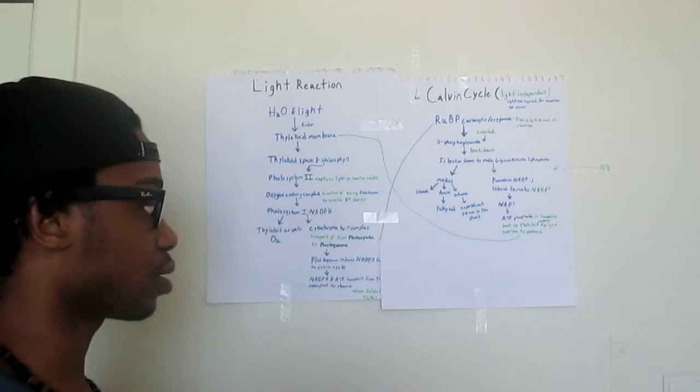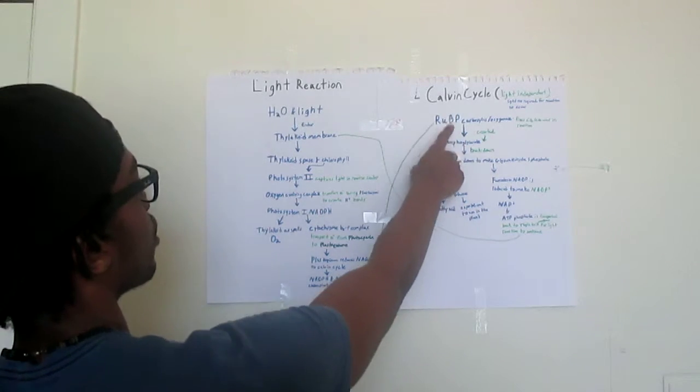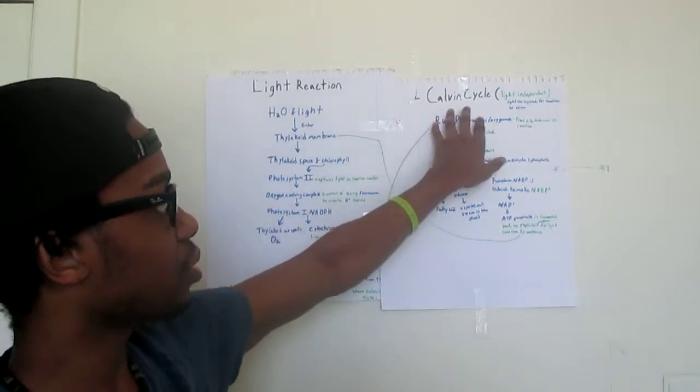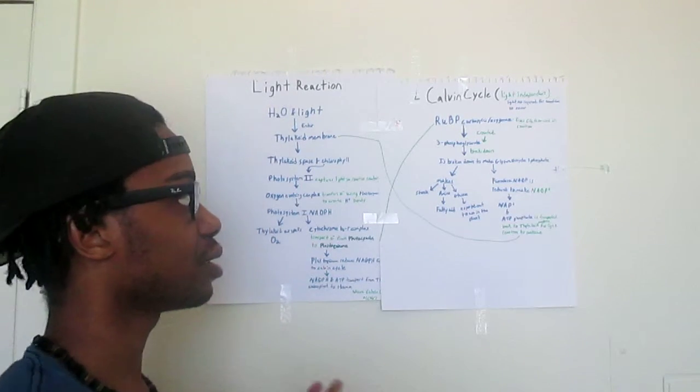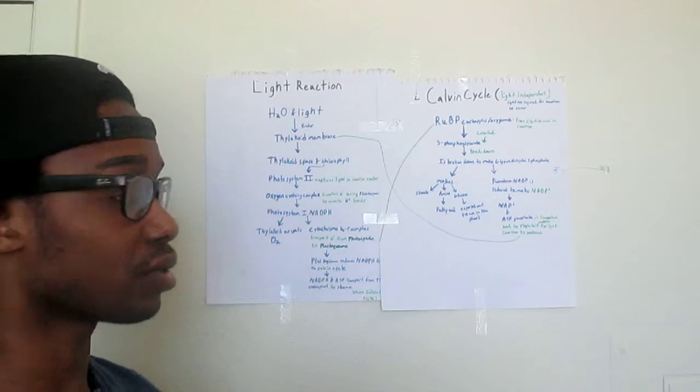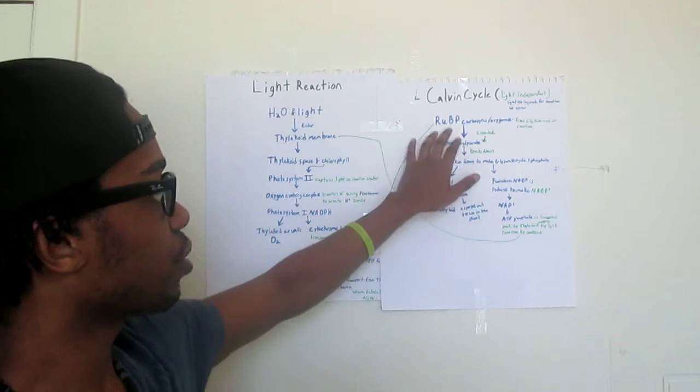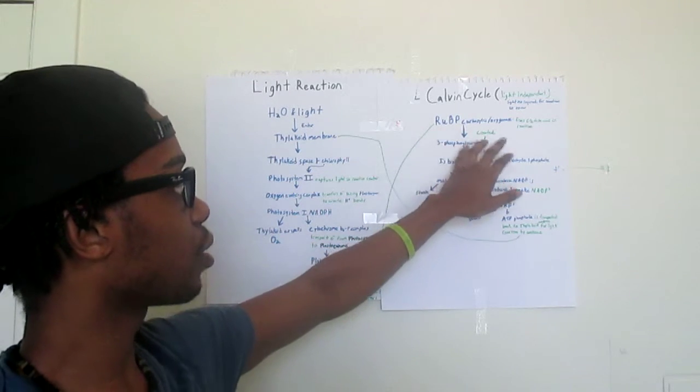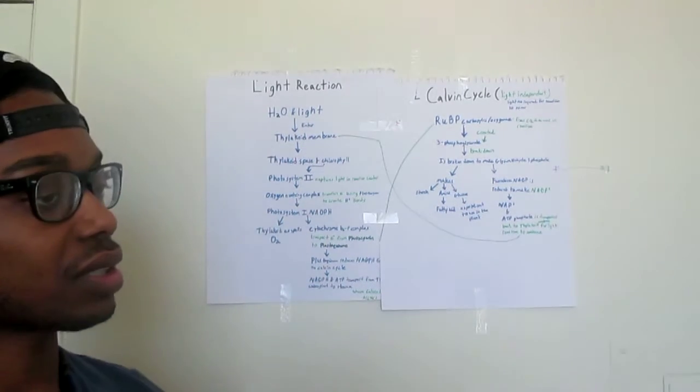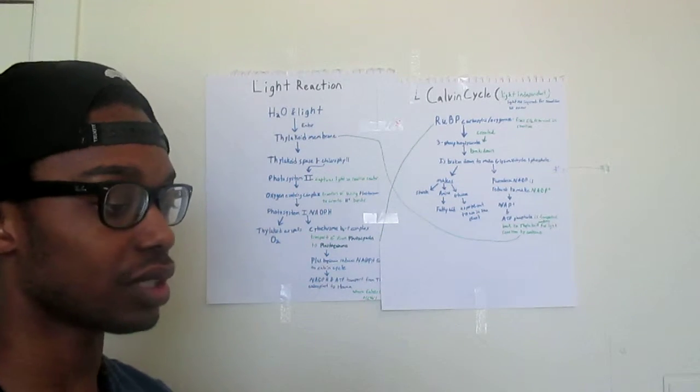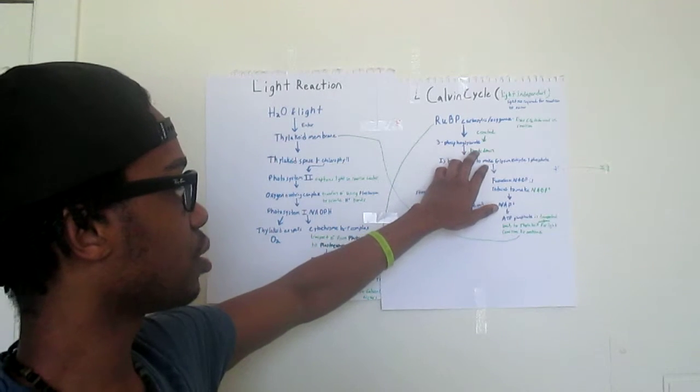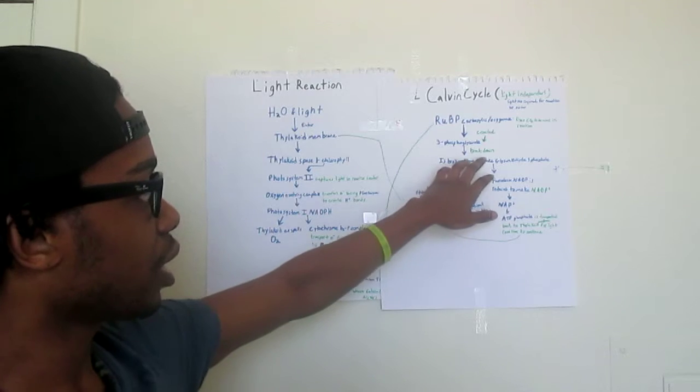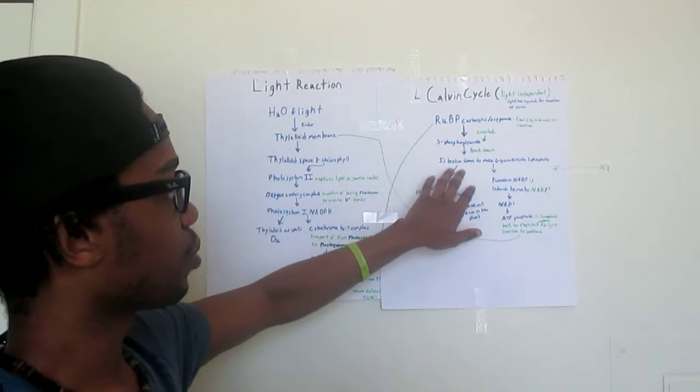Within the Calvin cycle, that is light independent, which means that light is not required for the reaction to occur. Within the RuBisCO chloroplast, oxygen fixes carbon dioxide CO2 to be used in the reaction, which creates 3-phosphoglycerate, and that is broken down to make glyceraldehyde 3-phosphate.